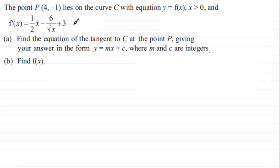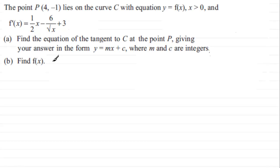In the first part we've got to find the equation of the tangent to curve C at point P, giving the answer in the form y = mx + c where m and c are integers. Then in part b we've got to go on to find f(x).